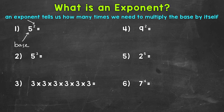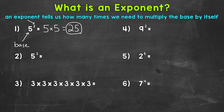So for number 1, our base of 5 needs to be expanded out and multiplied by itself 2 times. So 5 to the power of 2 means 5 times 5, and that equals 25. A common mistake is thinking that this means 5 times 2, which equals 10. But now we know that is not the case.